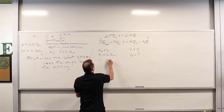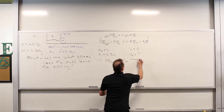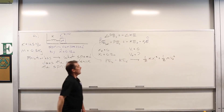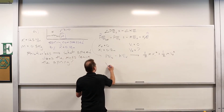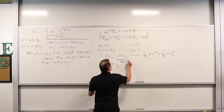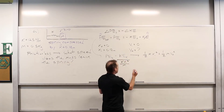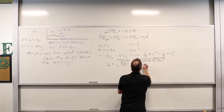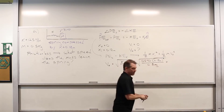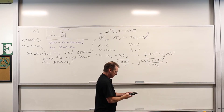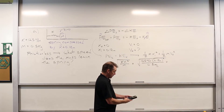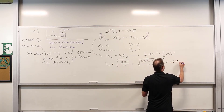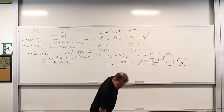We're left with: the initial potential energy equals the final kinetic energy. So PE_S_initial equals KE_final, which gives us one-half K X_initial squared equals one-half M V_final squared. Solving for V_final: V_final equals the square root of K X_initial squared divided by M. Plugging in 125 newtons per meter times 0.12 meters squared divided by 0.5 kilograms, we get 1.897 meters per second.